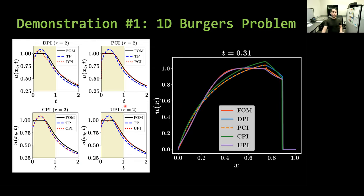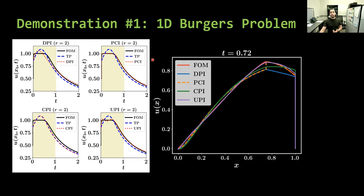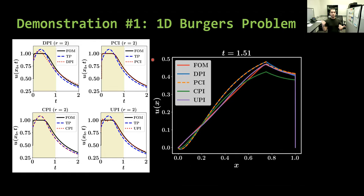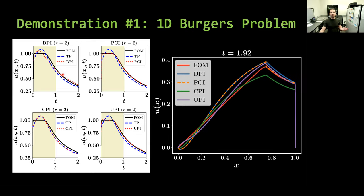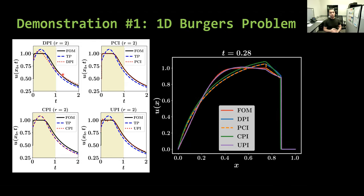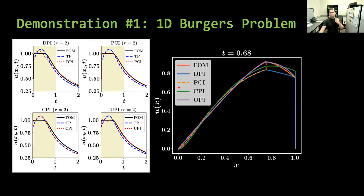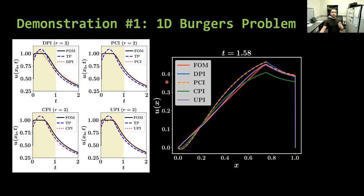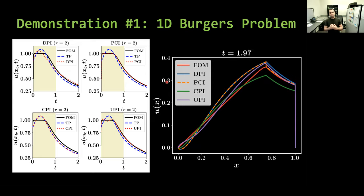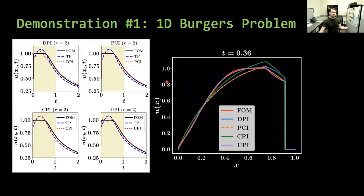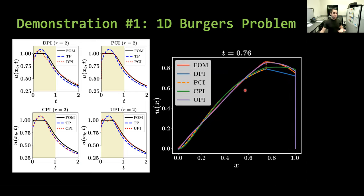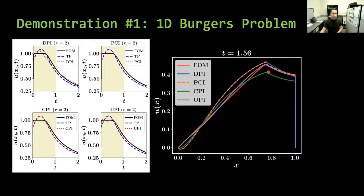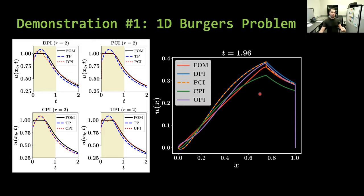In this example, we assume that the interface is at X equal to 0.75, and the results here correspond to ROM with only two modes in the left part and a FOM in the right part. As we see here, the DPI result is not that good because there is a projection error and a closure error. We haven't provided any correction here so far. But in PCI, we see it is almost identical to the FOM at the interface. In PCI, we use the DPI information. The correction only adds at the interface in the full space. If we notice here, we will see that in the left part, the PCI is matching the DPI. But at the interface, we will see some jump here representing the correction at the full space.